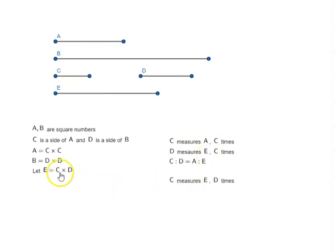C measures E D times. D measures B D times. We can write it in proportionality form, so C is to D is equal to E is to B.